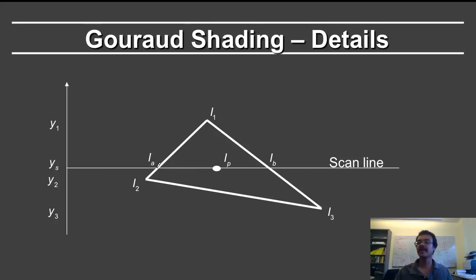So let's first talk about the color at iA. iA lies between i1 and i2. So if you want to do the interpolation, we do it along the vertical direction. Look at the length of this region and the length of this region. The length of this region is y1 minus ys. The length here is ys minus y2. The total length of course is y1 minus y2.